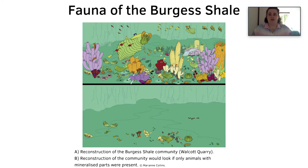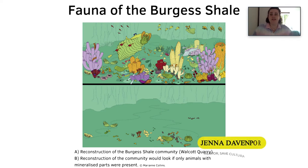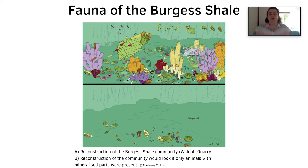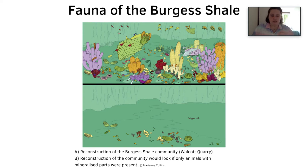The fauna of the Burgess Shale includes 150 species of animals, algae, and bacteria that have been described to date. This diagram highlights the amount of organisms we wouldn't have known about without exceptional soft-part preservation. The top image shows the Burgess Shale community from Walcott Quarry with soft-part preservation, and the bottom shows what would have been found using only hard-part preservation. We'll go through some really interesting and quite weird species found in the Burgess Shale, highlighting key ones.